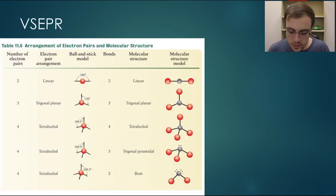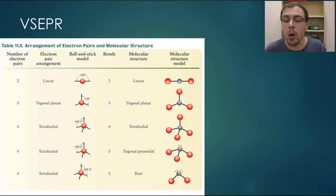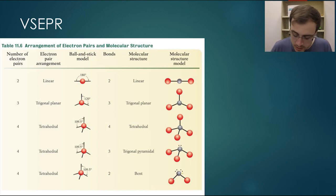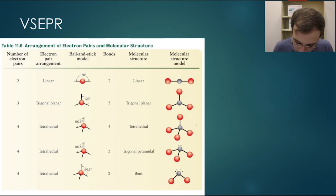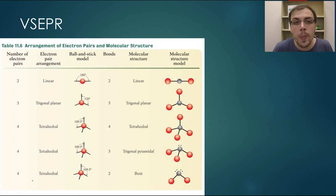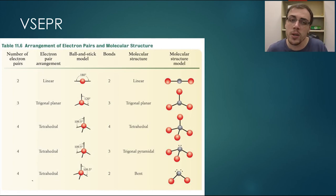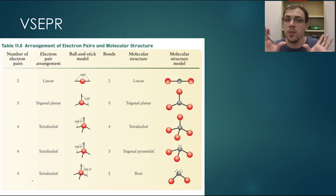These are the different molecular structures we can see based on how many bonds a particular element has. This is a tetrahedral shape — tetra meaning four. We know that if we have a compound with four different bonds, it must be tetrahedral, because it must be bound to four different things.